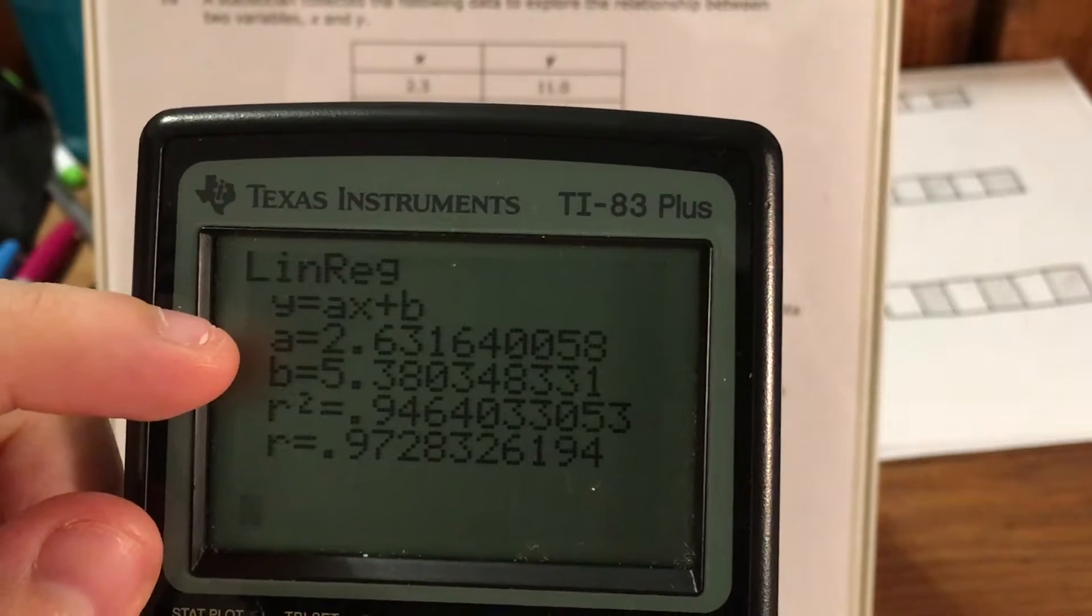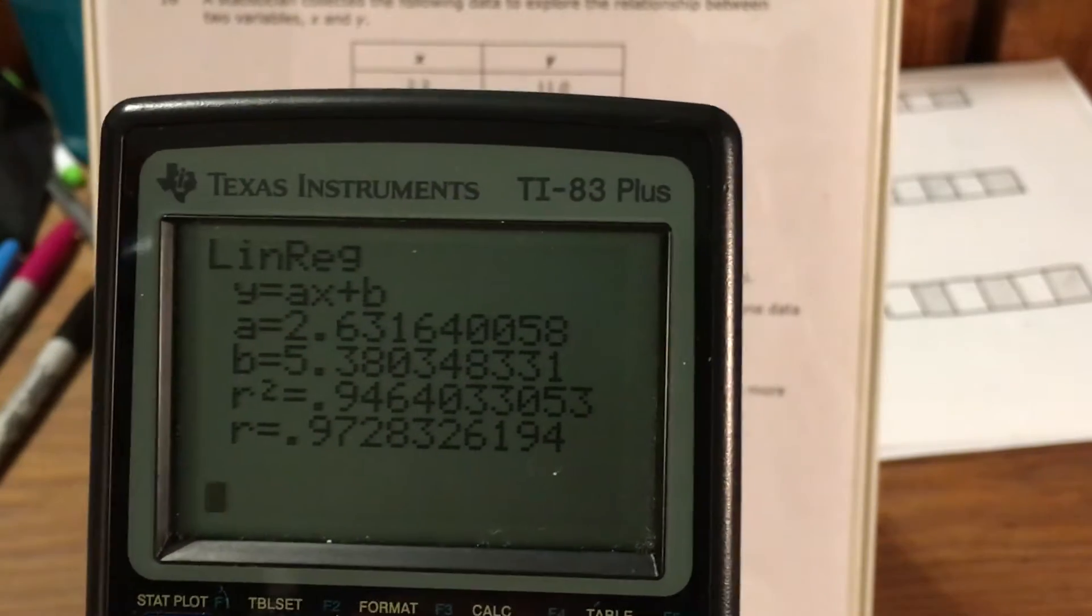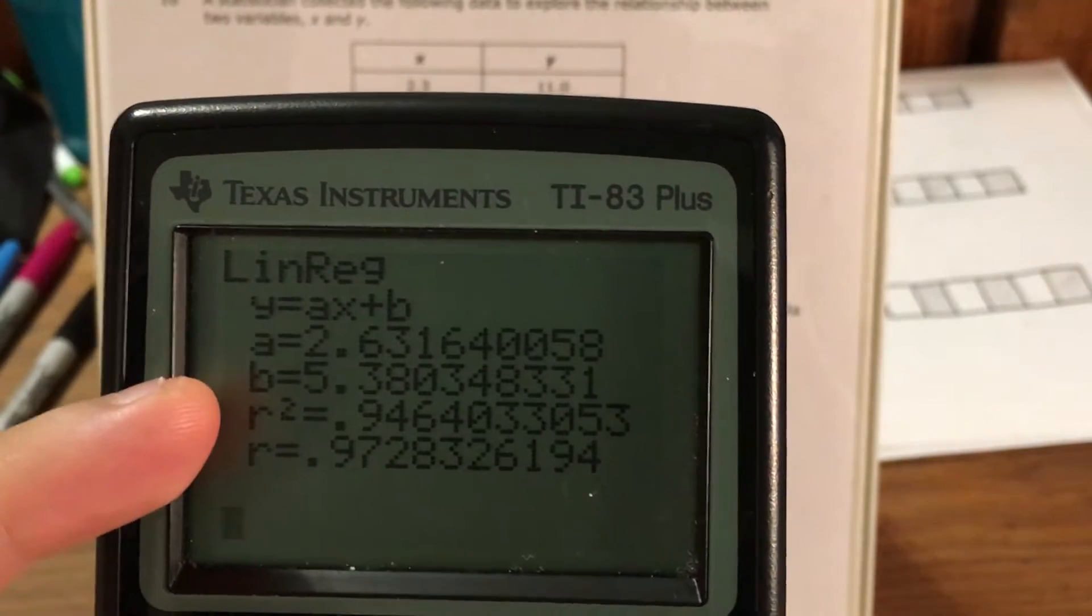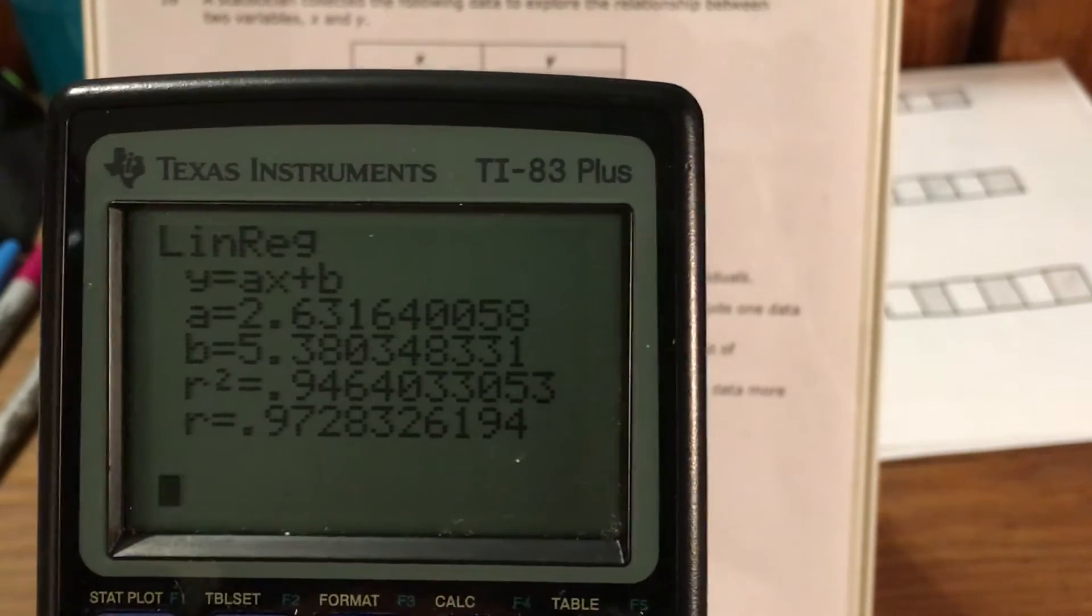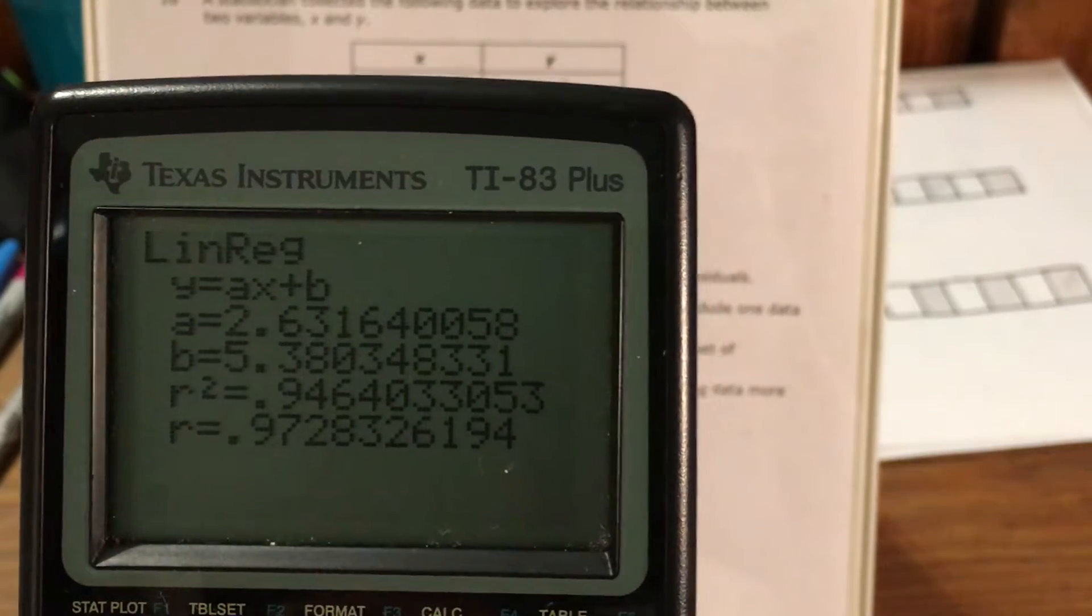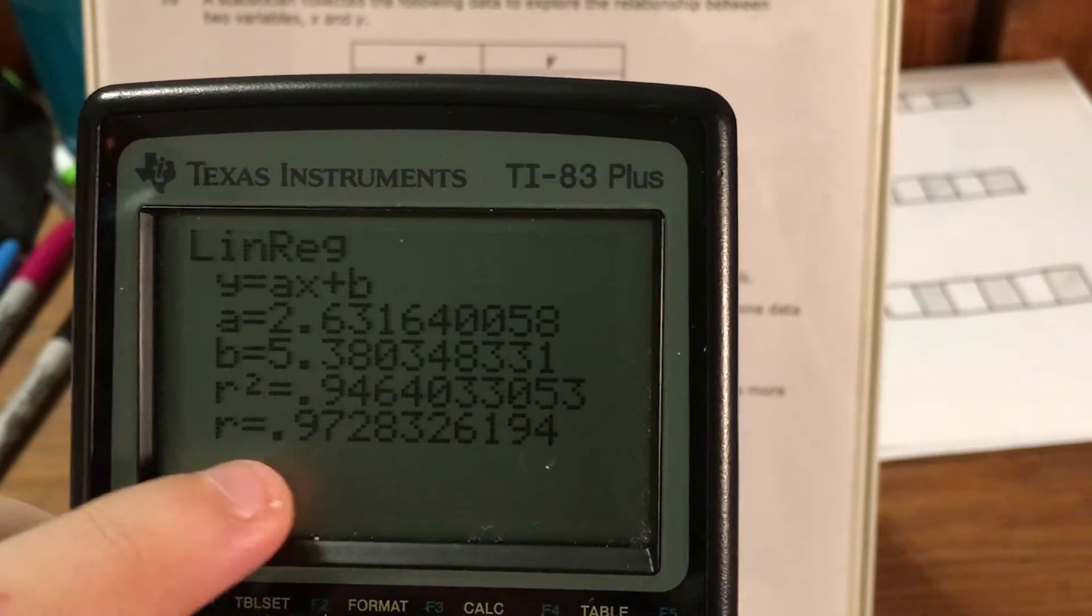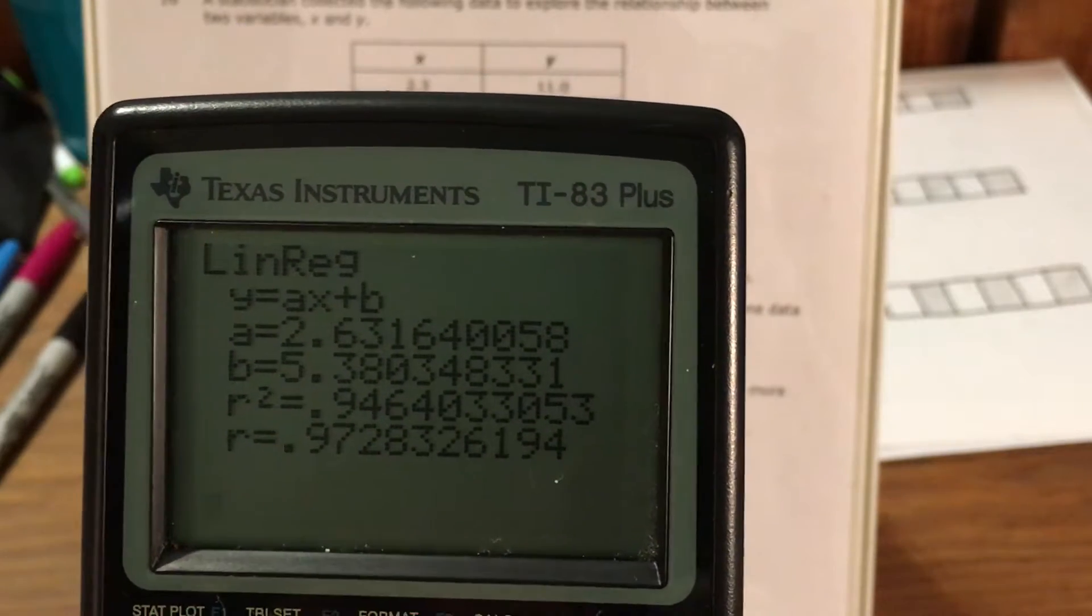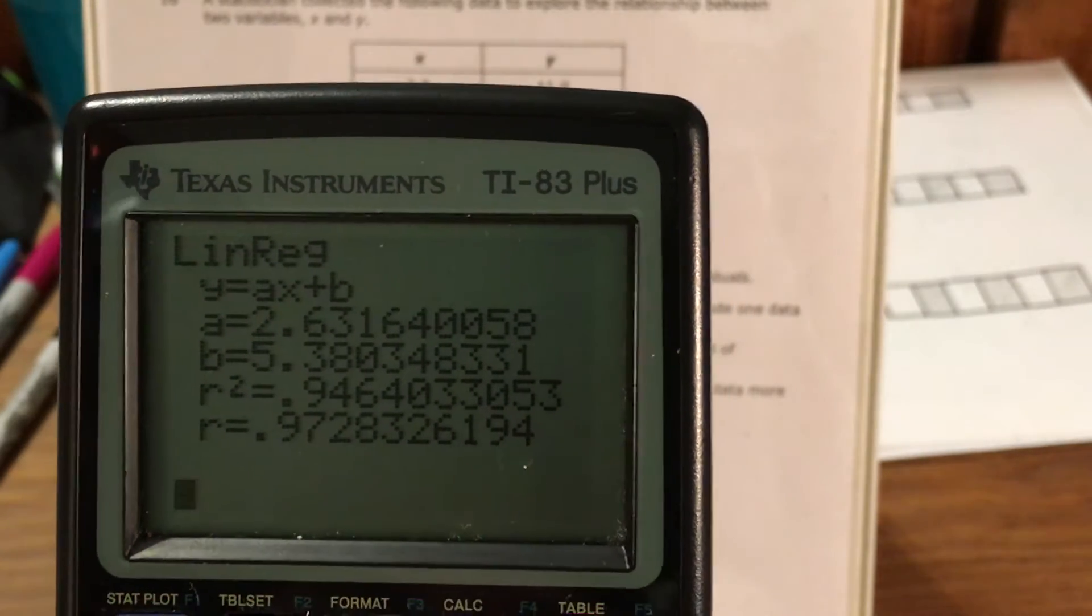And these two numbers, a and b, are just what would make up the line of best fit function. But R squared and R are what I'm really interested in because these are going to tell me how strong is my linear model. And anything really close to one or negative one tells me that it's very, very, very strong.